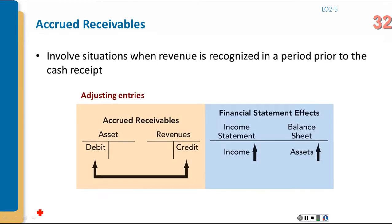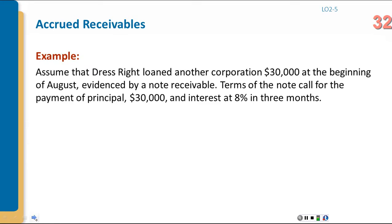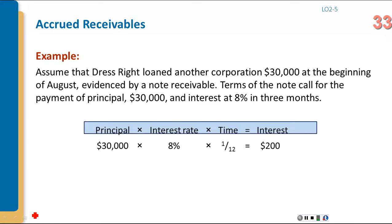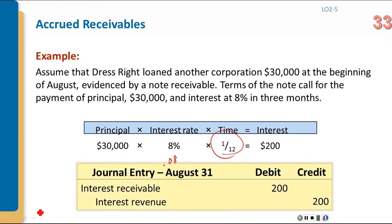For interest receivable: if you are owed interest, calculate principal × interest rate × time. For example, principal × 8% (0.08) × one twelfth for one month = $200. The journal entry records interest receivable (debit) and interest revenue (credit).